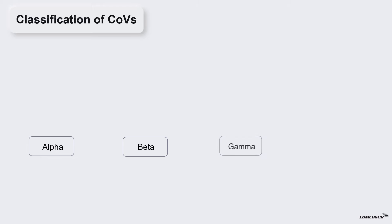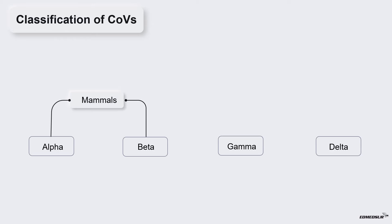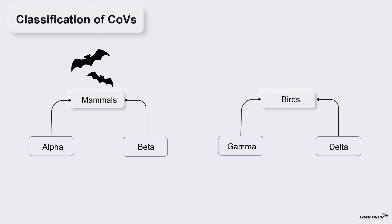Coronaviruses have been divided into four genera: Alpha, Beta, Gamma, and Delta. Alpha and Beta coronaviruses infect mammals, while Gamma and Delta coronaviruses primarily infect birds. Bats are the reservoir for Alpha and Beta coronaviruses, and birds are the reservoir for Gamma and Delta coronaviruses.